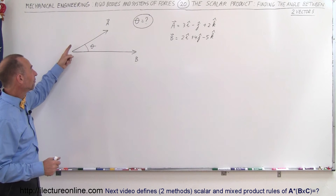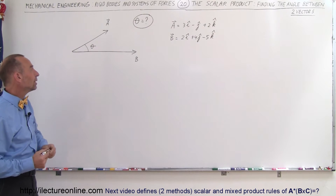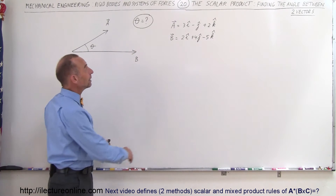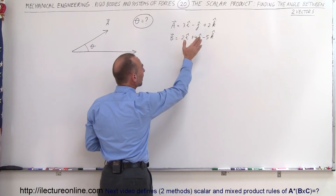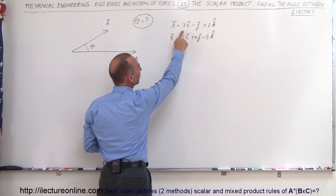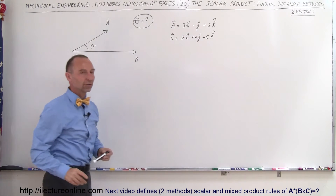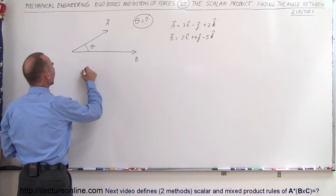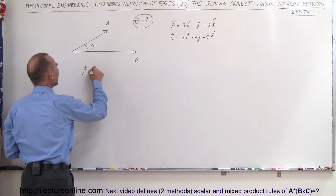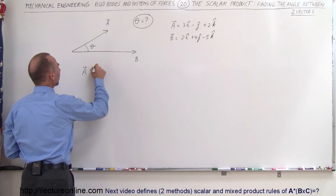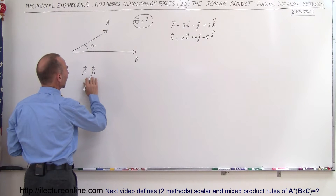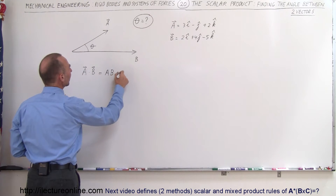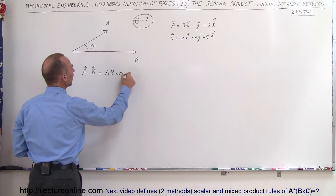So here we have vectors A and B. The angle between them is theta, and the objective is to find the angle between them, knowing the X, Y, and Z components of each of the two vectors. Let me show you why we can do that. We know that A dot B — the scalar product between vectors A and B — is equal to the magnitude of A times the magnitude of B times the cosine of the angle between them.